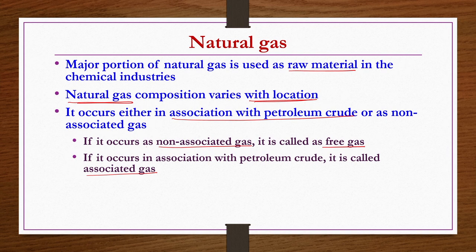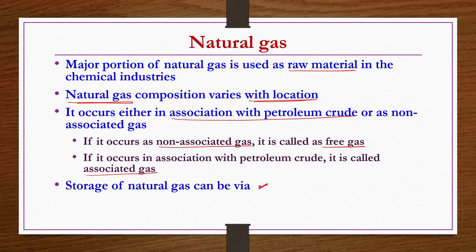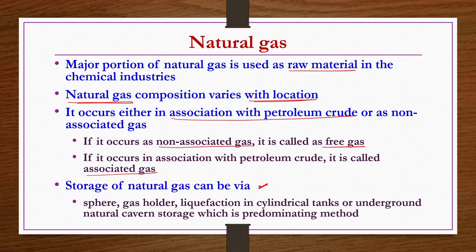When natural gas comes from a petroleum well in association with petroleum crude, it is known as associated gas. Storage of natural gas can be done by several methods including spheres, gas holders, liquefaction in cylindrical tanks or underground, and natural carbon storage.